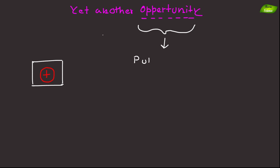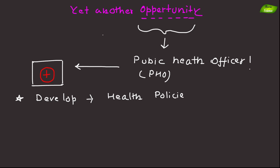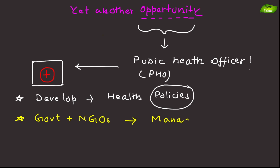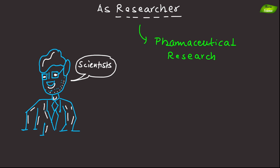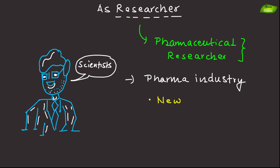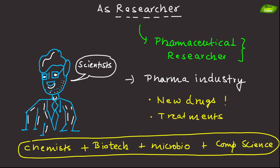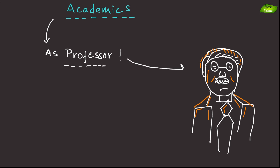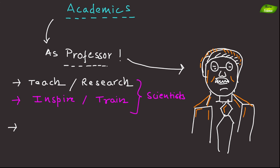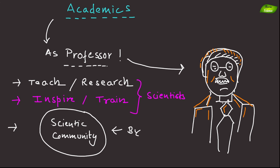Another key opportunity is as a public health officer, who develops and implements health policies related to parasitic infections, working with government and non-government organizations to manage public health programs. Pharmaceutical researchers work in the pharmaceutical industry to develop new drugs and treatments, often collaborating with multidisciplinary teams including chemists, biologists, biotechnologists, microbiologists, and computer scientists. Academic professors teach and conduct research at universities, inspiring the next generation of scientists while contributing to the scientific community.